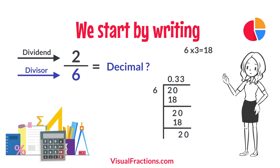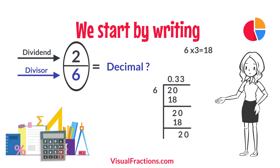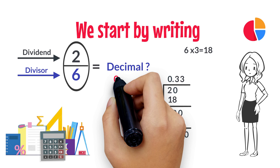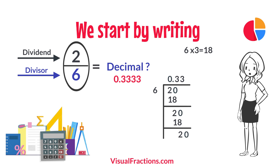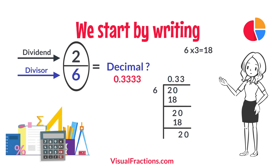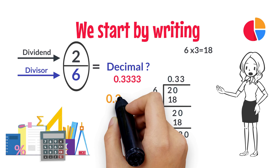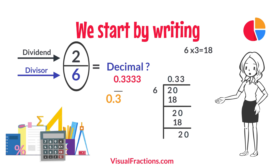Therefore, the fraction 2 sixths converted to a decimal is 0.3333, which can also be written as 0.3 with a bar over the 3.